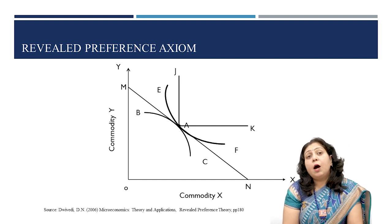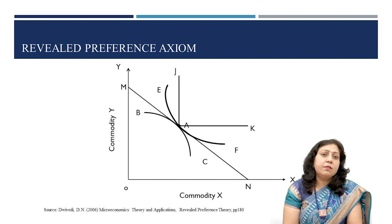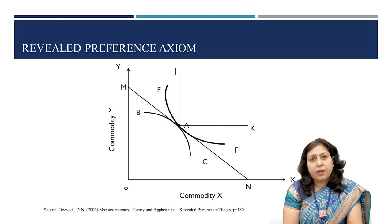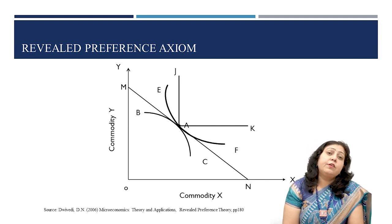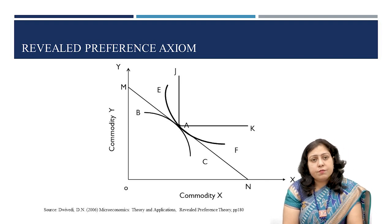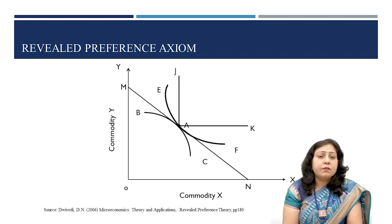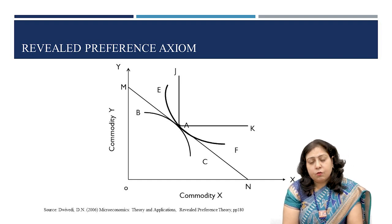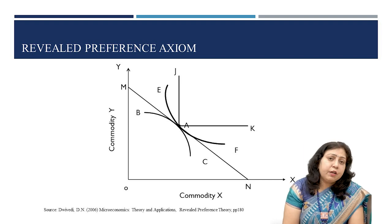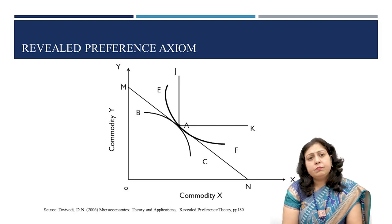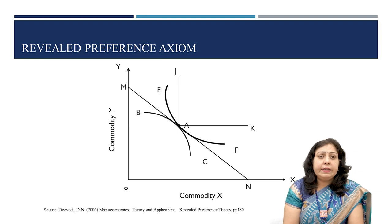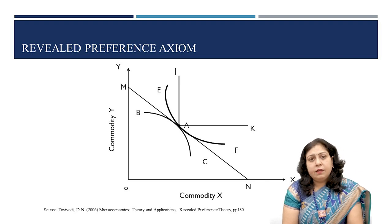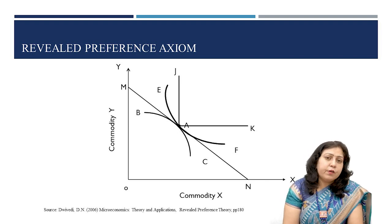The same procedure can be done for the upper ignorance zone JAM, to find points in relation to A. If we join all these points — D, A, B, and C — then we will get the offer curve EF, as shown in this slide.